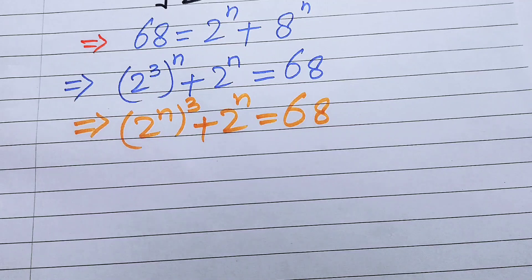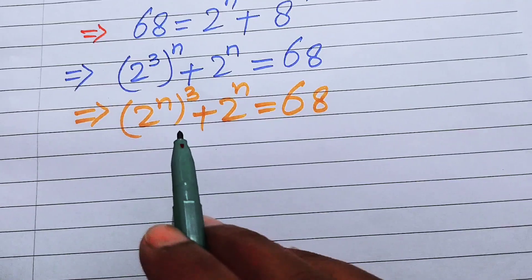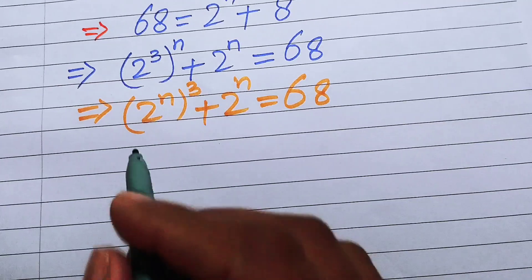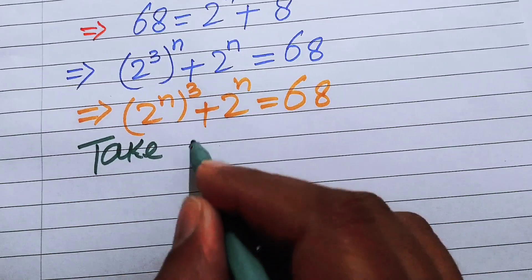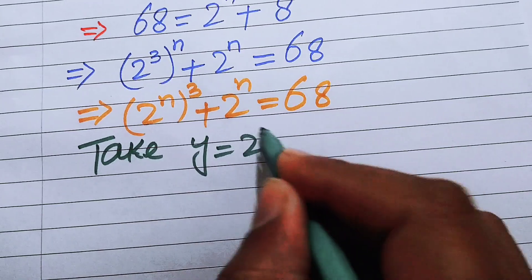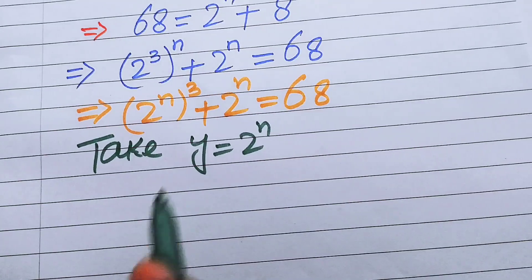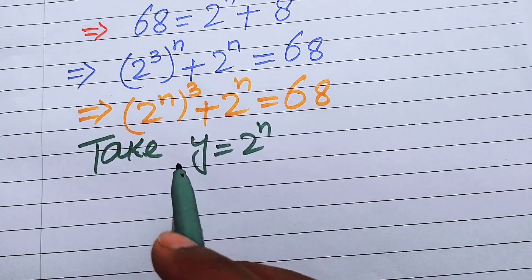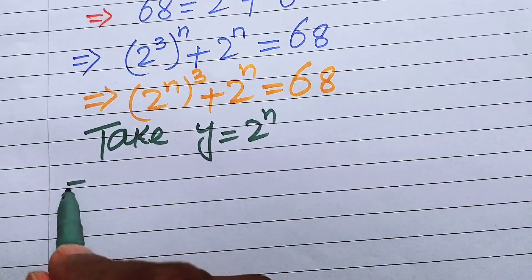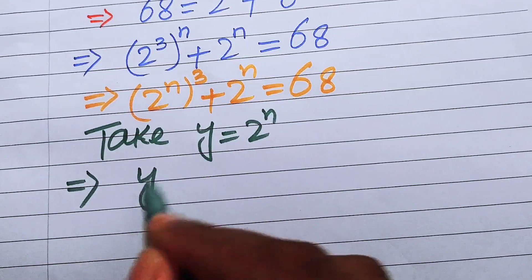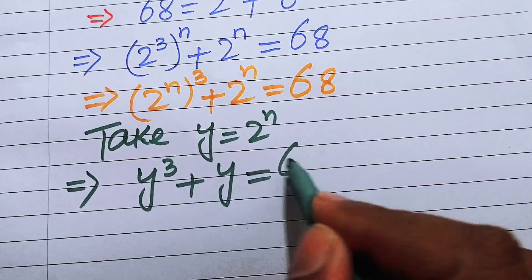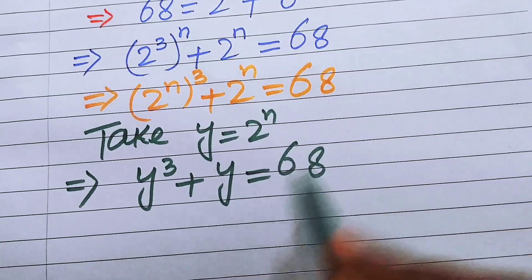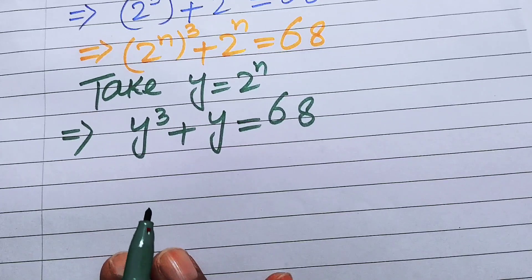We apply a substitution to convert this into a standard cubic form. We let y equal 2 to the power of n. Substituting into the equation gives us: y cubed plus y equals 68.